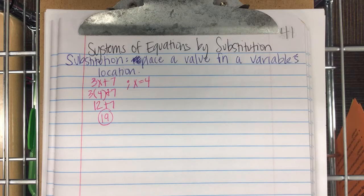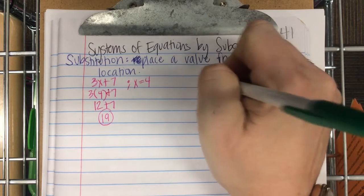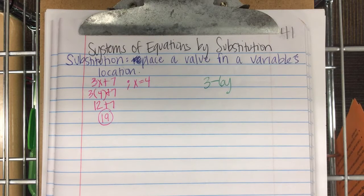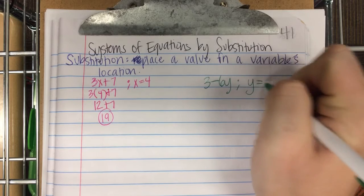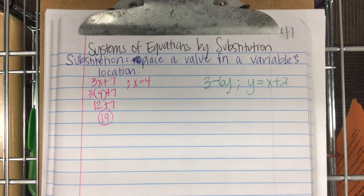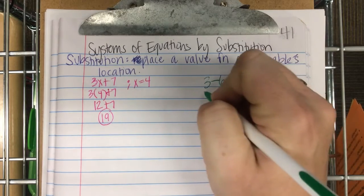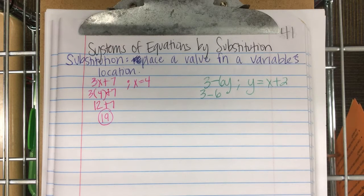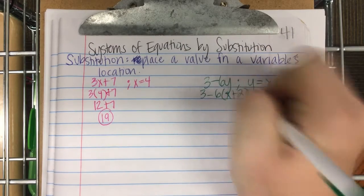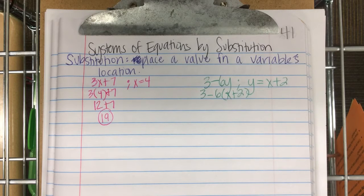We can substitute. Let's try another one. 3 minus 6y. And they tell us that y is equal to x plus 2. Now, here's the trick. And I know Mrs. Patrick said it, and I know I said it all the time in pre-algebra. When you substitute, you should substitute using parentheses. So, 3 minus 6. And instead of the variable y, what am I substituting? x plus 2.